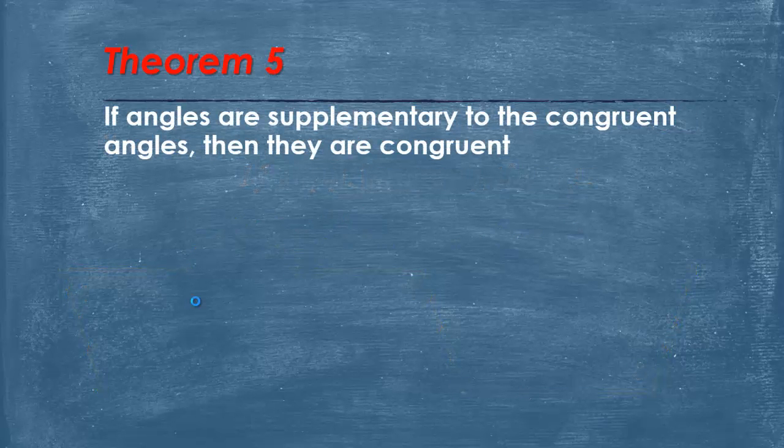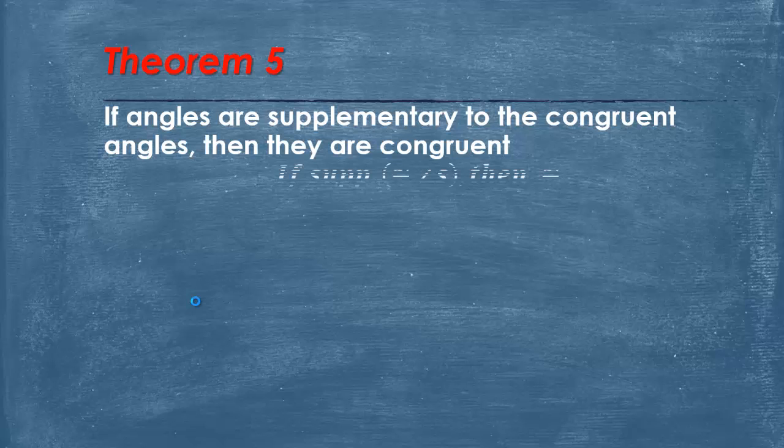Theorem 5 states that if angles are supplementary to congruent angles, then they are congruent. And the shortened way: if supplementary, congruent angles, then congruent. So you can just write it like this on a proof. Make sure you're making note of that.